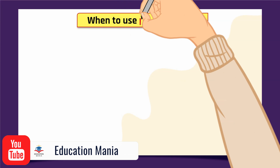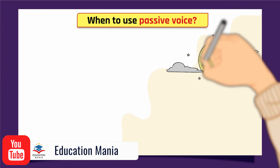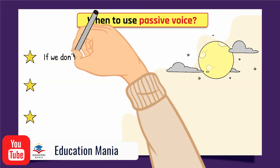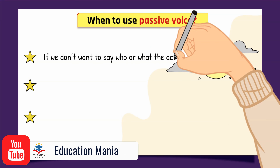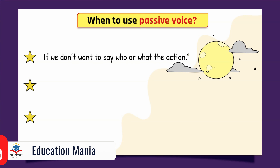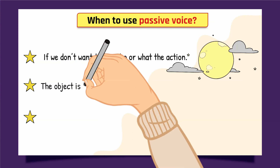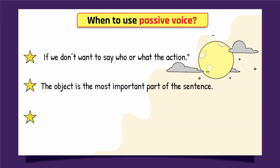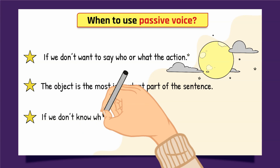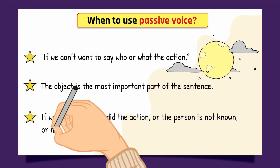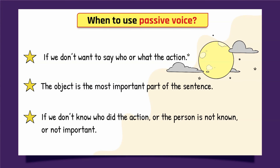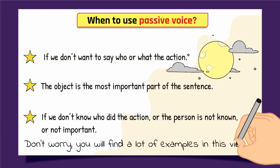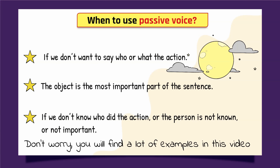When to use passive voice: if we don't want to say who or what did the action; when the object is the most important part of the sentence; or if we don't know who did the action, or the person is not known or not important. Don't worry — you will find a lot of examples in this video.